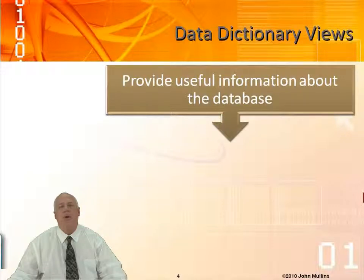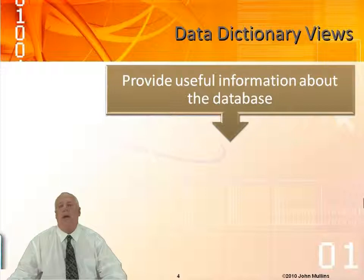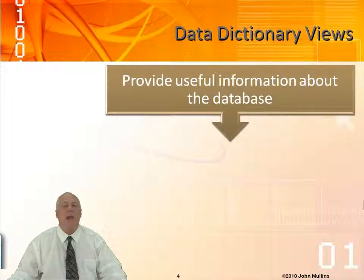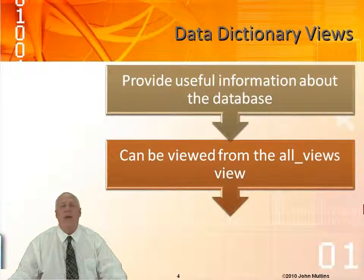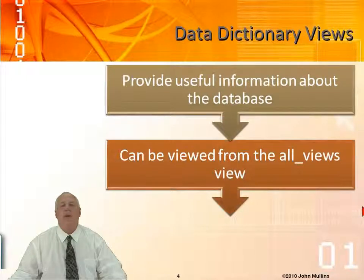So what are Data Dictionary Views? They're going to give us information about any object in the database, including the database itself. We'll often refer to these things as metadata. Think about any particular Oracle object you can think of — there's going to be a view that gives us information about that. In Oracle, there are hundreds of these data dictionary views, and you can see the complete list from a view called all_views. Like I said, there's going to be hundreds of those.